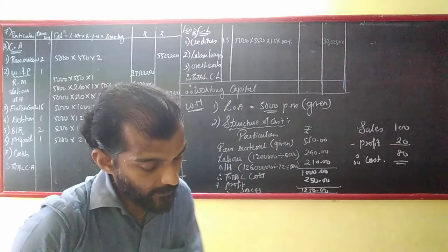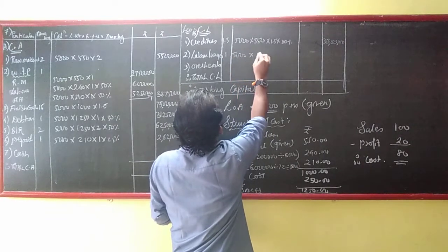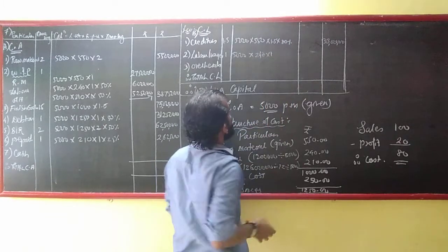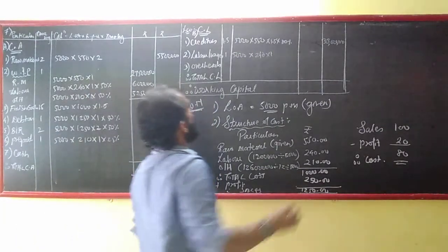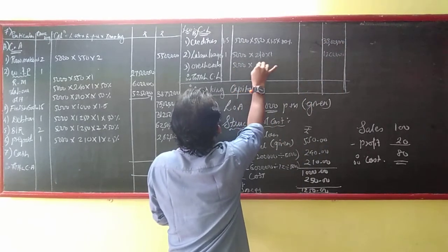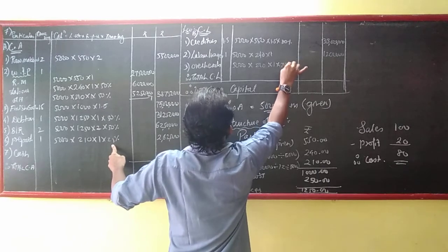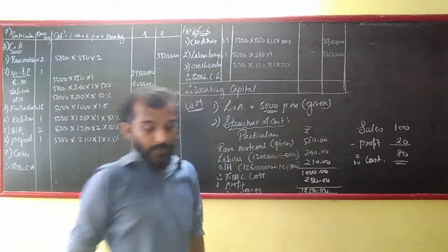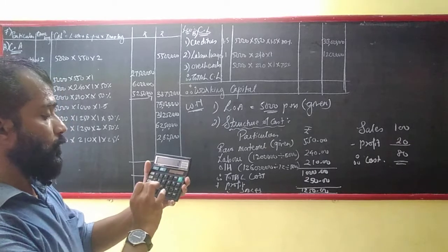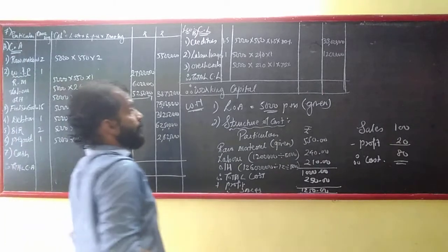Time limit for wages is 1 month. So: 5,000 × ₹240 × 1 for wages payable. And for outstanding expenses: 5,000 × ₹210 × 75% = ₹7,87,500.